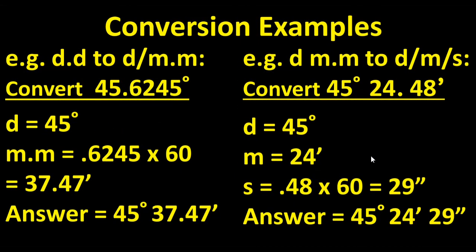First, we're going to convert 45.6245 degrees into the degree-decimal minute format. The degree remains the same, and the decimal minute is determined by multiplying 0.6245 times 60 to get 37.47 minutes. The answer is 45 degrees, 37.47 minutes. In this next example, we're going to convert 45 degrees, 25.48 minutes into degrees-minutes-seconds. The degree remains 45, the minute remains 25, and the seconds are calculated by multiplying the decimal portion of the minute, 0.48, times 60, which gives you 29 seconds.